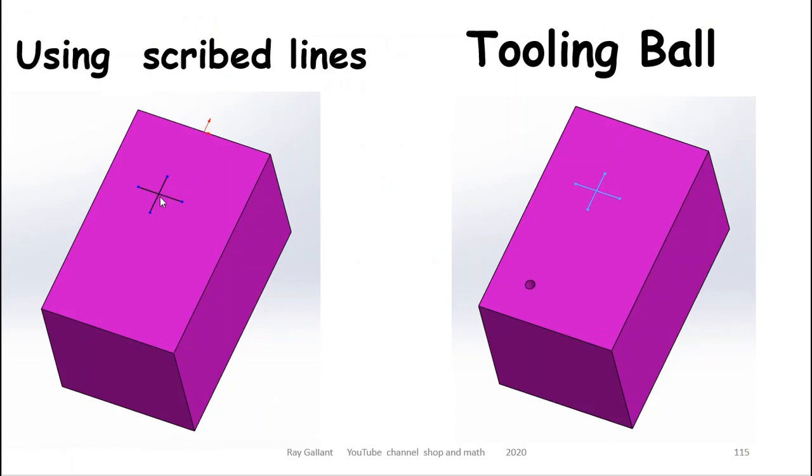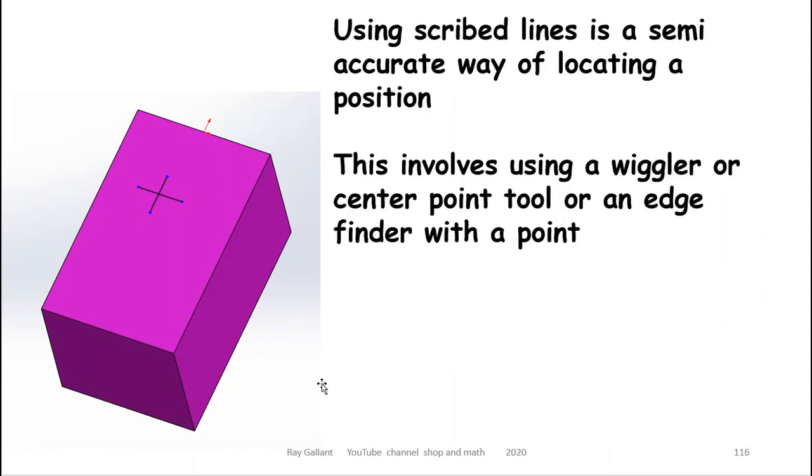You can use scribe lines, you can use a wiggler. There's a few other ways of doing this, but we're going to be using a tooling ball. And the nice thing about a tooling ball is you can indicate it and move over a certain distance, and it'll go exactly where you want to go. Compared to scribe lines, you're kind of hitting and missing. You can't indicate it at all. You can use a wiggler or an edge finder with a point, but it's still quite difficult to locate actual lines.